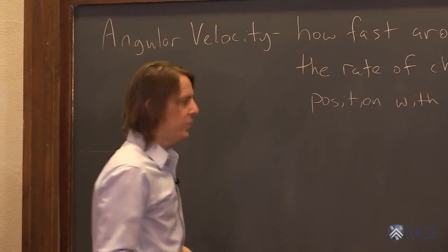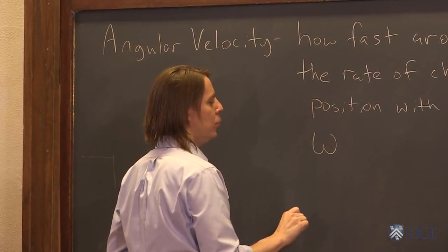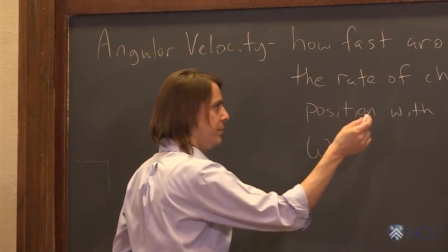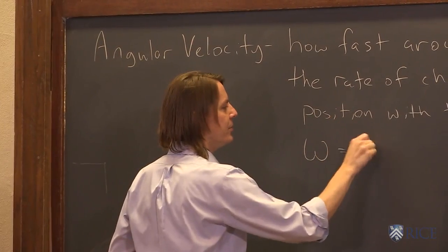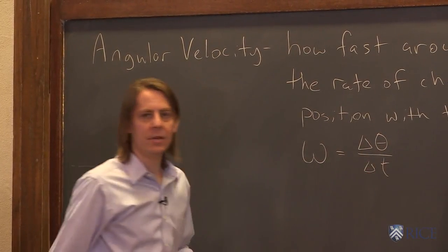So mathematically, we represent angular velocity with an omega. Omega, the big O. And that is equal to the rate of change of angular position, which is just delta theta, and with time means delta t like that.